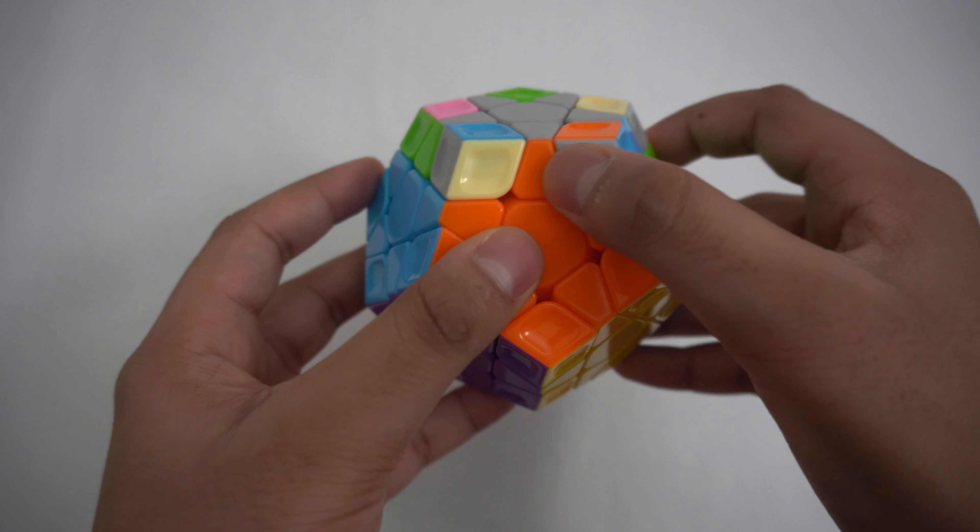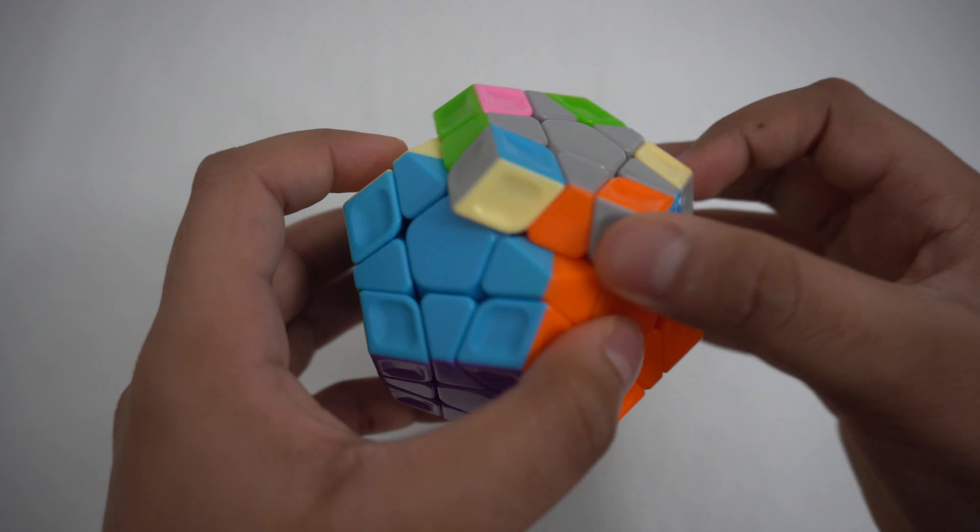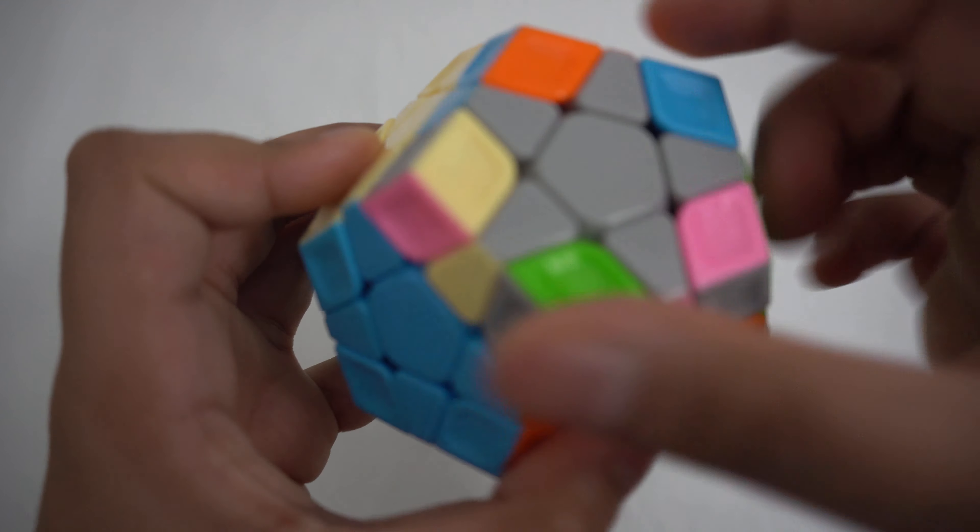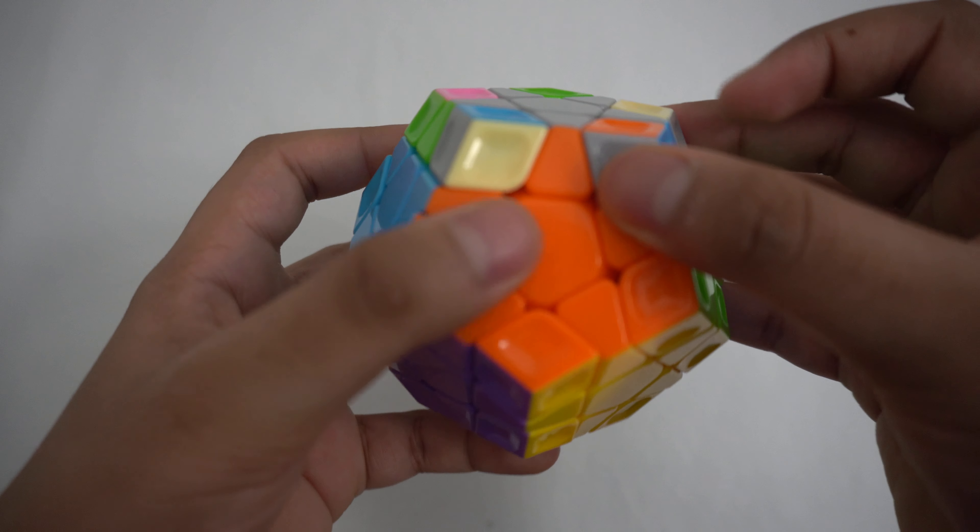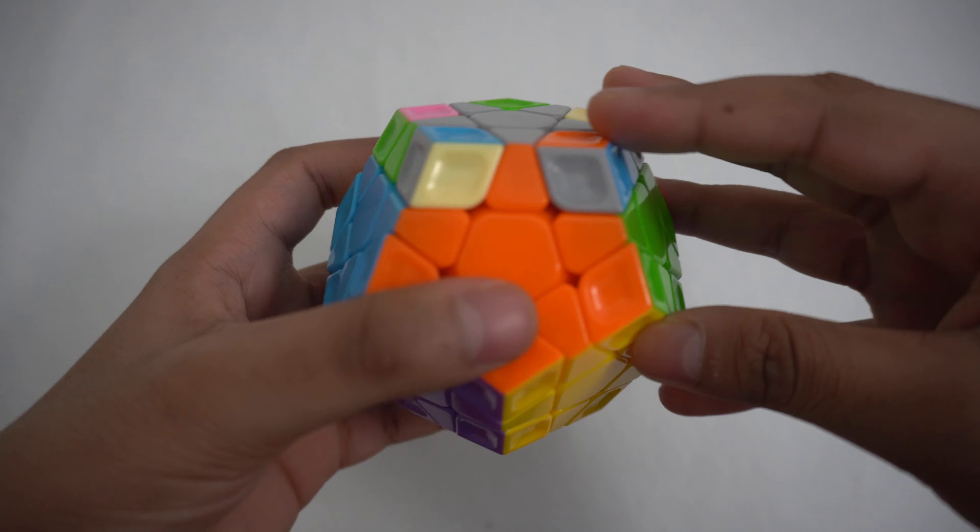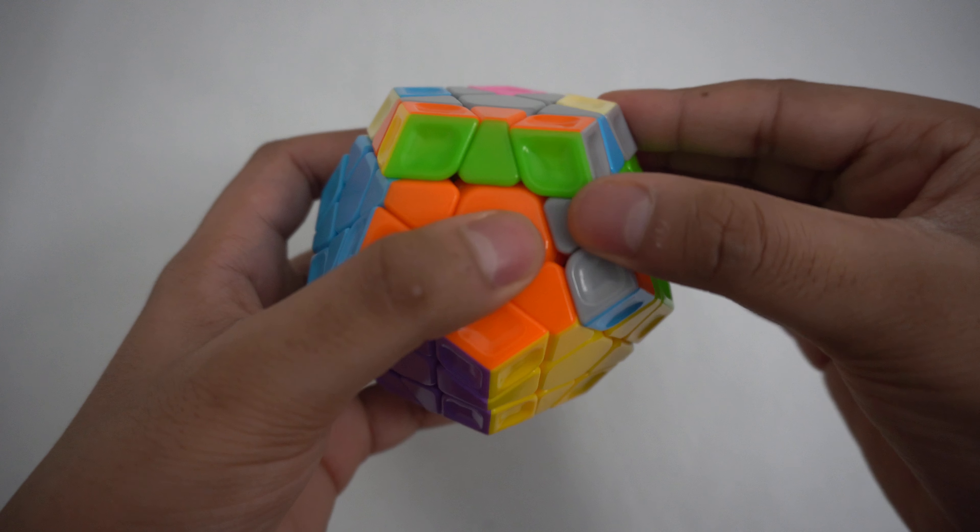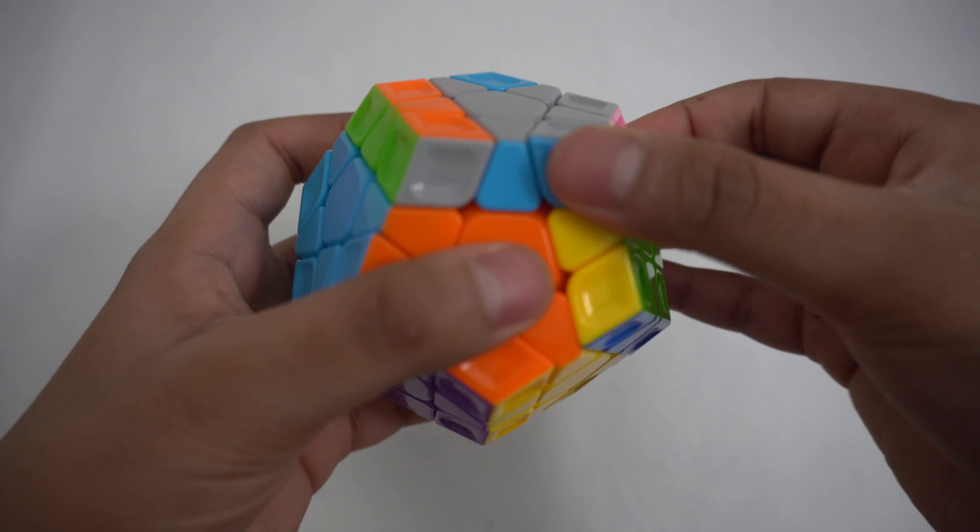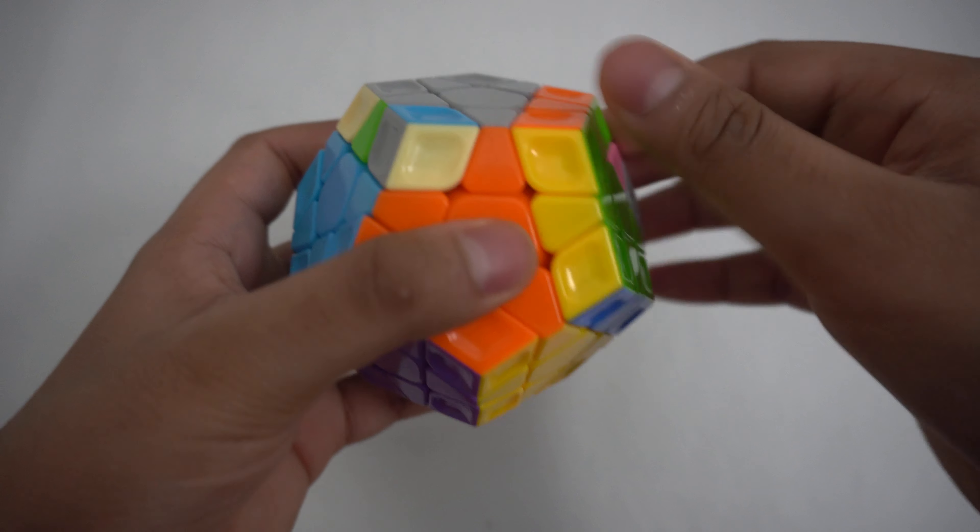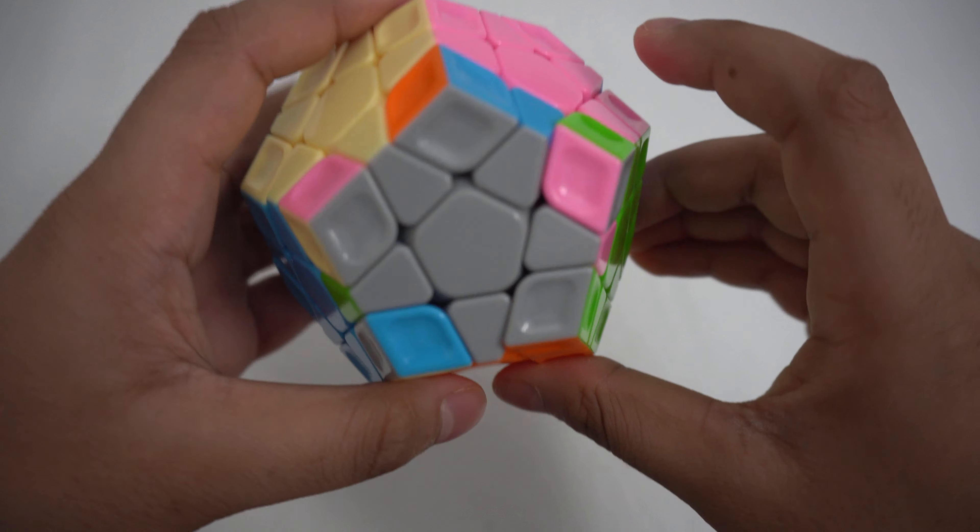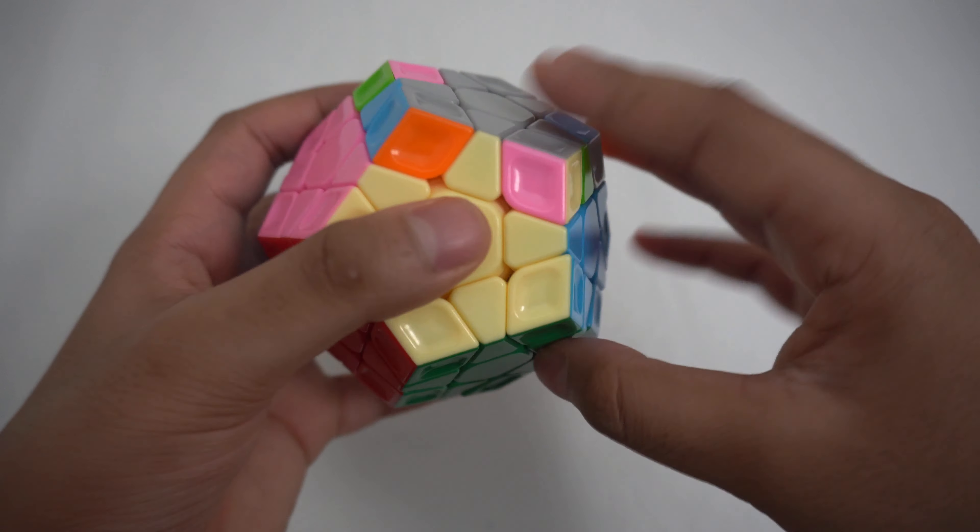If you have the case where you can only get one correct edge from every turn you make, then do this algorithm with the correct edge facing you. R U R prime, U R U R prime. This should give you another case and you can solve it with one of the previous algorithms.